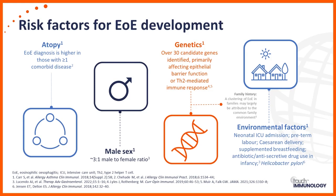Other interesting features include male predominance — we see more males than females with a three-to-one ratio, for both children and adults. We see a family history in some patients with eosinophilic esophagitis, which is also worth bearing in mind. When you look at the incidence of eosinophilic esophagitis, it is going up exponentially, particularly in Europe and North America, and this seems to parallel the increased incidence of atopy and allergy — they seem to go hand in hand.